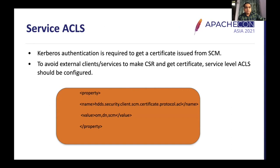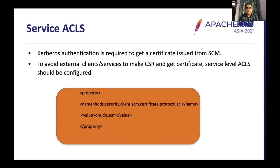When a role needs to get a certificate from SCM, there is a crucial authentication happening under the hood. To avoid external client processes making CSR requests to SCM and obtaining any certificate, service-level ACLs should be configured via the property 'ozone.security.client.scm.certificate.protocol.acl'. This property defines which types of roles are allowed to get certificates, and all others will be denied by SCM.